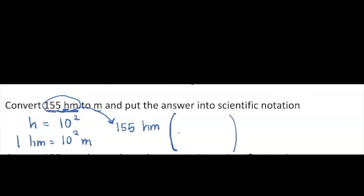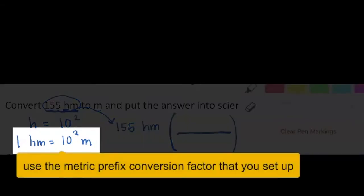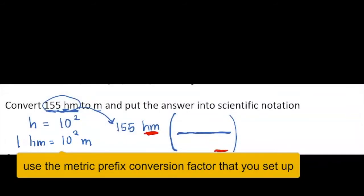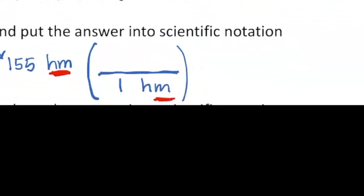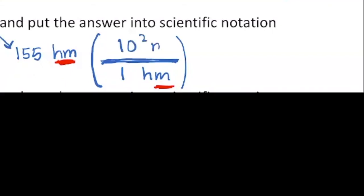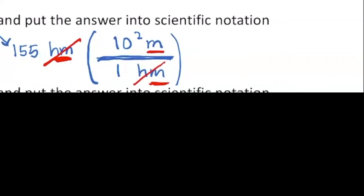To solve this, take the number 155 and write 155 hm, then put a fraction next to it — parentheses with a horizontal fraction line. Decide what goes in the bottom of that fraction to cancel the units of hm. You need hm in the denominator, which is 1 hm from the conversion factor. Then on top of the fraction goes the other side of the equality: 10 squared meters. This allows canceling the units hm, and the remaining unit is m.